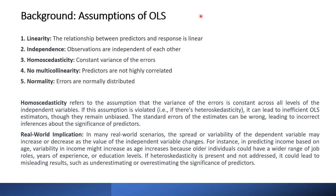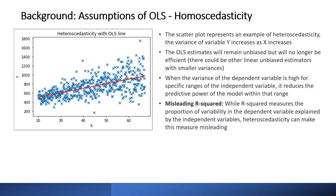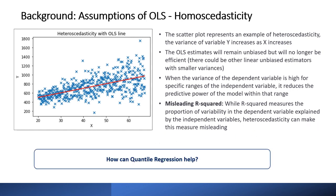This visualization shows an example of heteroscedasticity — a scatter plot of y versus x where the variance of y increases as x increases. The OLS line is plotted, and OLS estimates will remain unbiased but will no longer be efficient, so other linear unbiased estimators with smaller variance may exist. High variance in the dependent variable for specific ranges of the independent variable reduces the model's predictive power in that range and can produce a misleading R-squared.